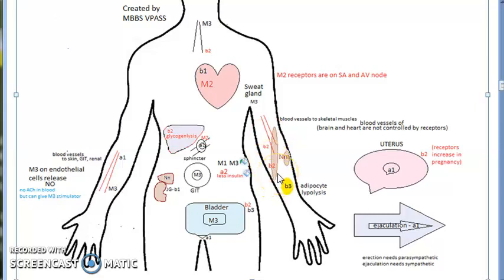Muscle will become tired and weak. Why? If you look at this diagram, beta-2 will increase the blood supply to the skeletal muscle. Now the beta-2 is blocked, so the blood supply to the skeletal muscle will reduce, leading to muscle weakness and tiredness.